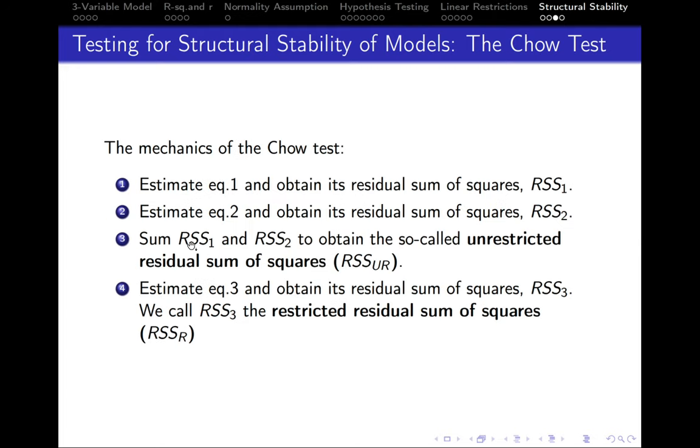After this, we sum the residual sum of squares from the first equation and the residual sum of squares from the second equation to obtain the so-called unrestricted residual sum of squares.